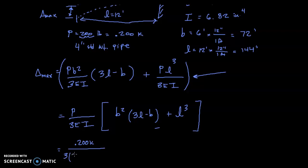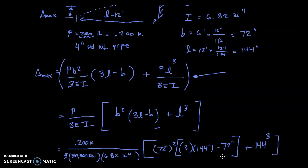So this is going to be 0.200 kips divided by 3 times modulus of elasticity is 30,000 ksi. And the moment of inertia was 6.82 inches to the fourth. And that is all multiplied by 72 inches squared times 3, times the length was 144 inches minus 72 inches. Let's make that a bracket. And plus L, my length was 144 cubed and end bracket.